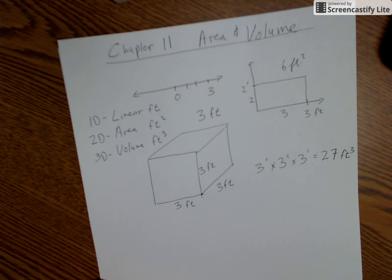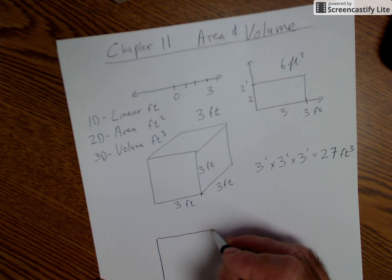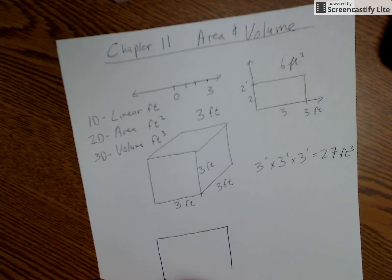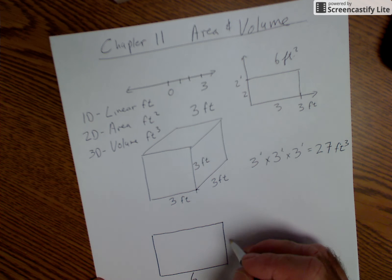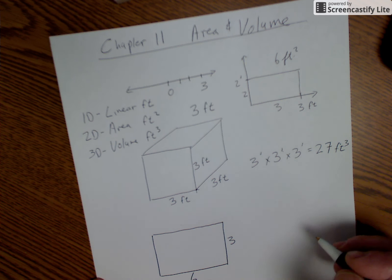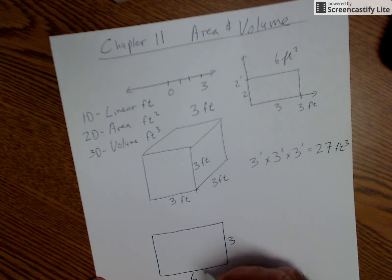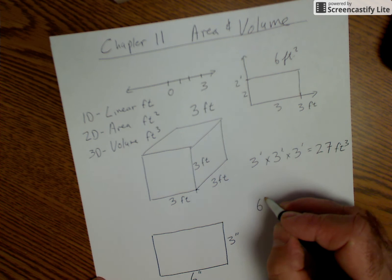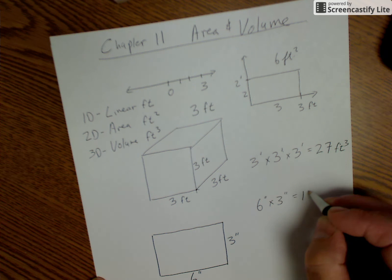Now let's talk about area. To find the area of a rectangle, it's always base times height — for a square or rectangle. So if these are inches, six inches times three inches will give me 18 square inches.